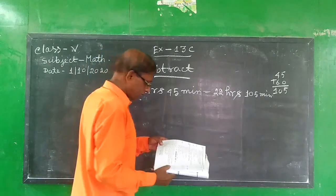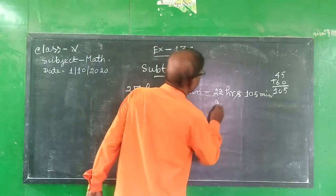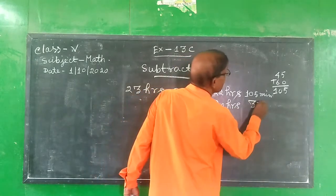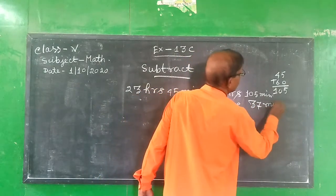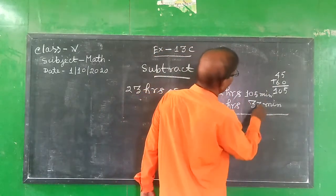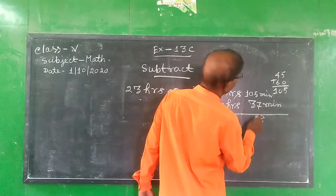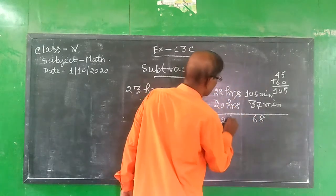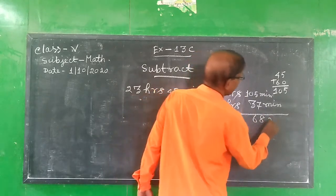Now subtract 20 hours, 37 minutes. Minus, we get 2 hours 68 minutes. All of you understand it.